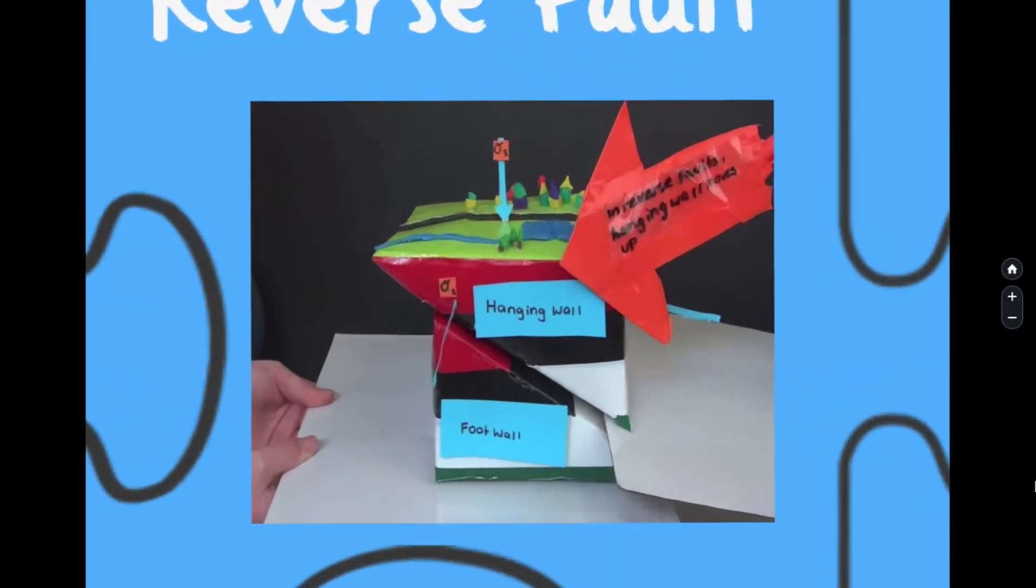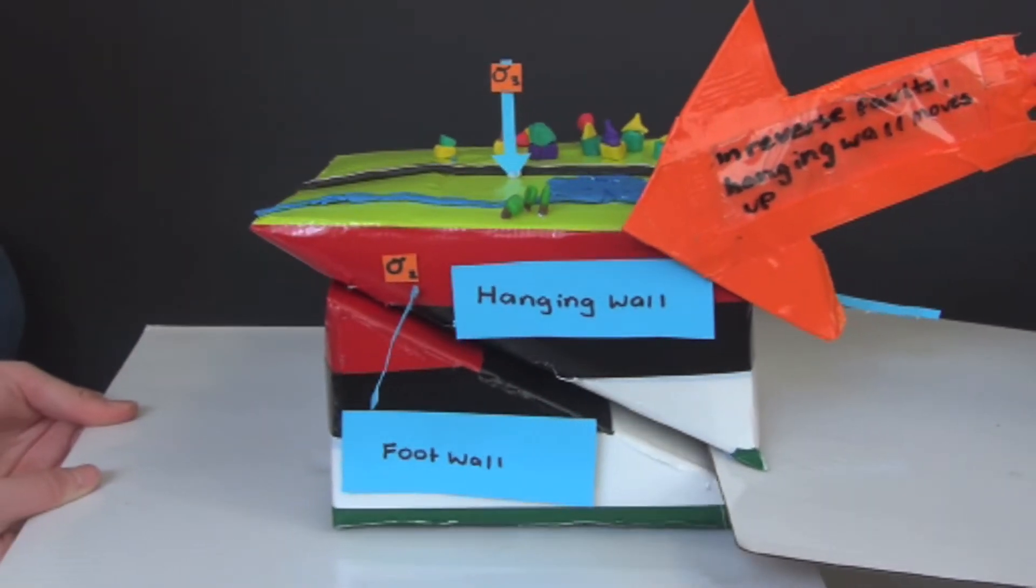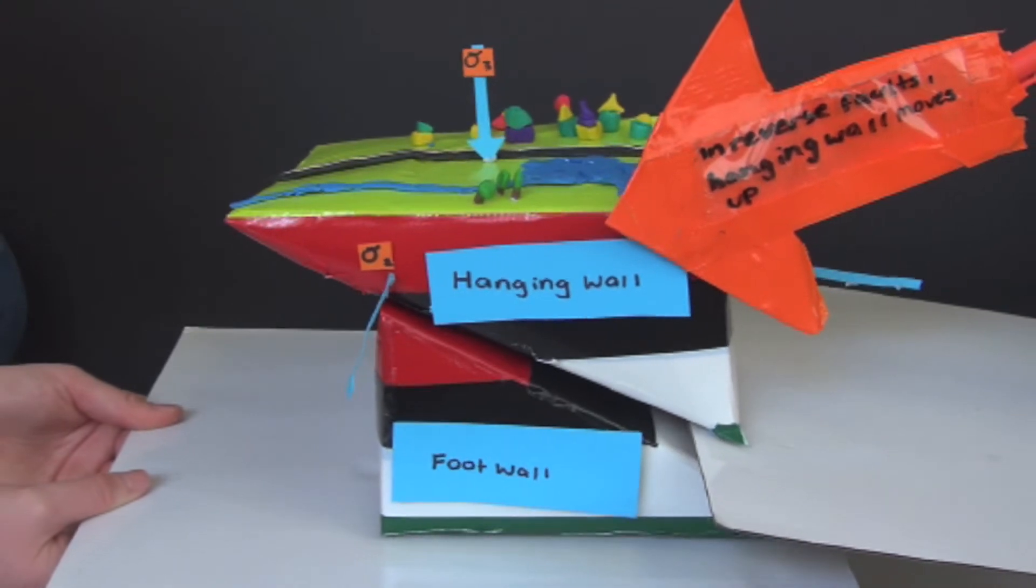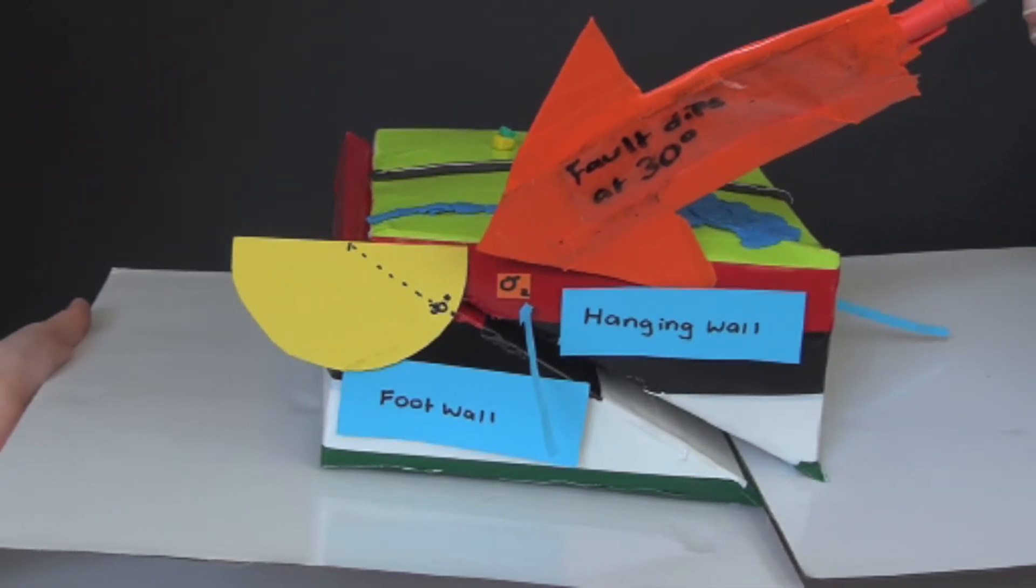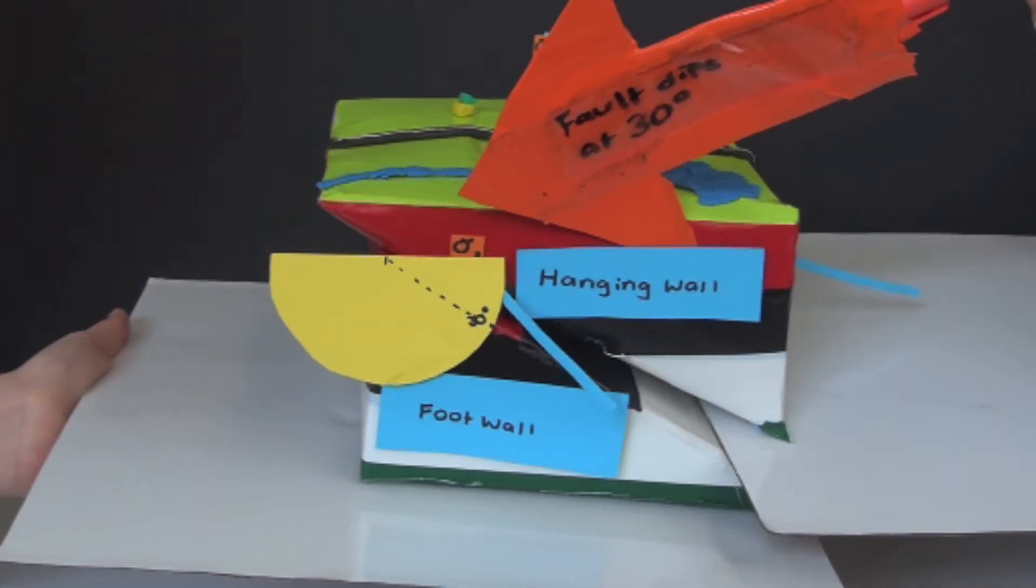Reverse faults are the exact opposite of normal faults in which the hanging wall rises relative to the foot wall. Reverse faults thrust dip at approximately 30 degrees and they tend to occur in areas undergoing compression.